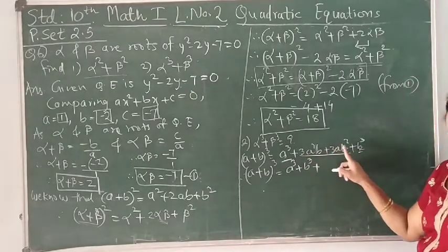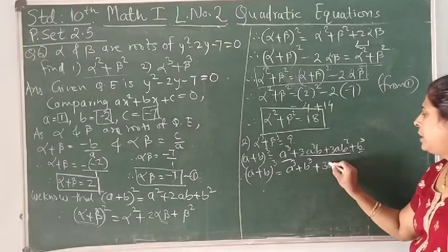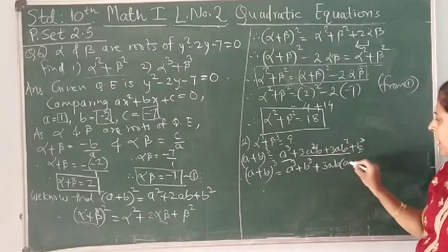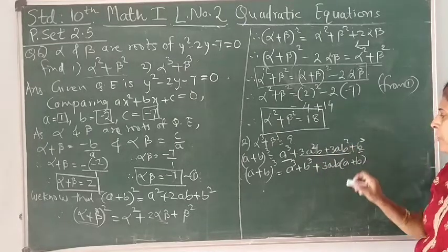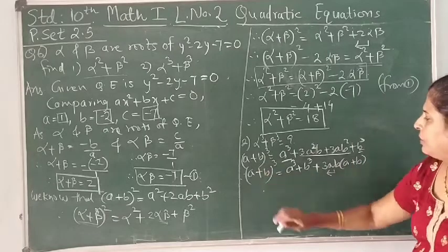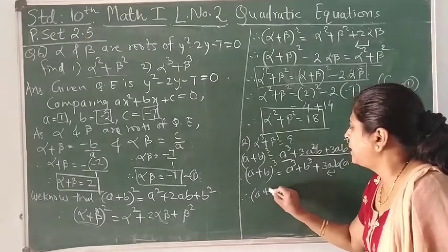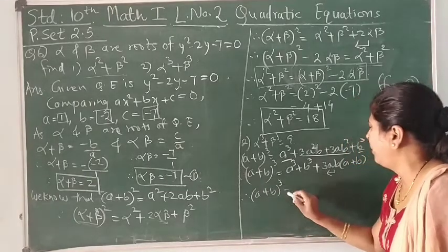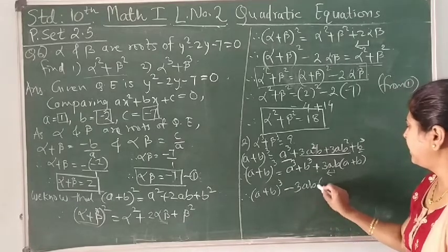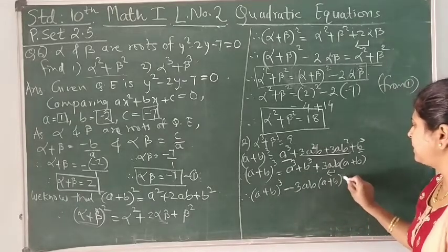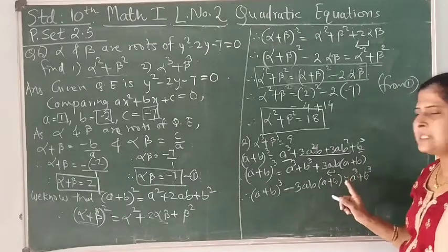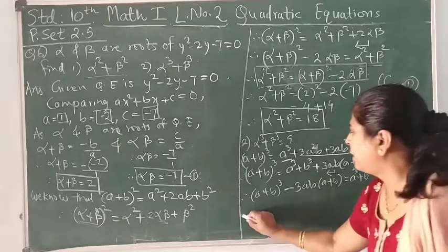Moving 3ab(a + b) to the left side: a³ + b³ = (a + b)³ - 3ab(a + b). Replacing a and b with α and β: α³ + β³ = (α + β)³ - 3αβ(α + β).